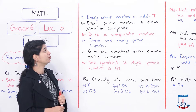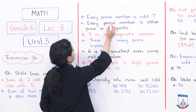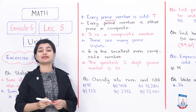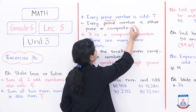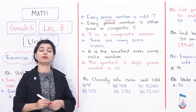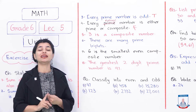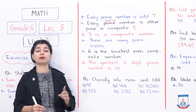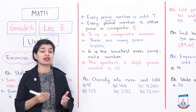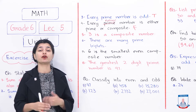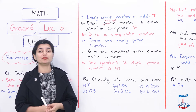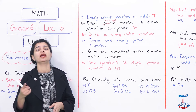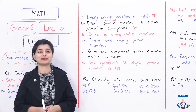The next statement: every natural number is either prime or composite. This is false. While most natural numbers are either prime or composite, the number 1 is an exception. One is not a prime number because it has only one factor, and it is not a composite number because it doesn't have more than one factor. So we cannot say all natural numbers are prime or composite.